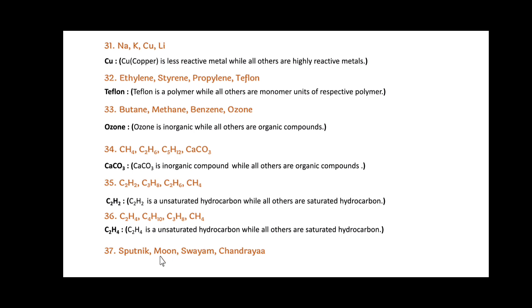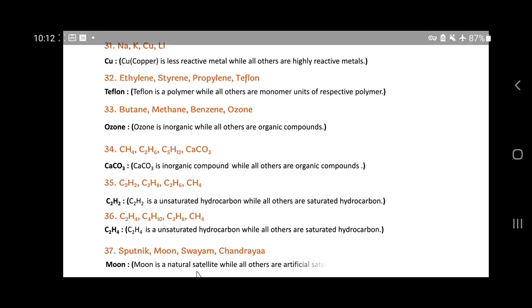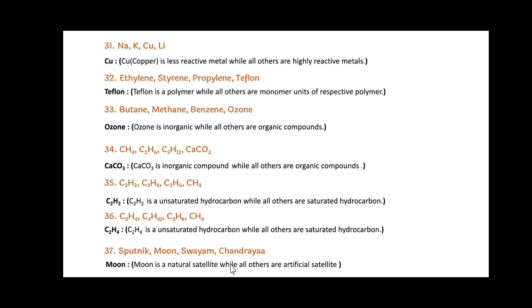Next: Sputnik, Moon, Swayam and Chandrayaan. Here, Moon is the odd one out. Since Moon is a natural satellite, while all others — Sputnik, Swayam and Chandrayaan — are artificial satellites.